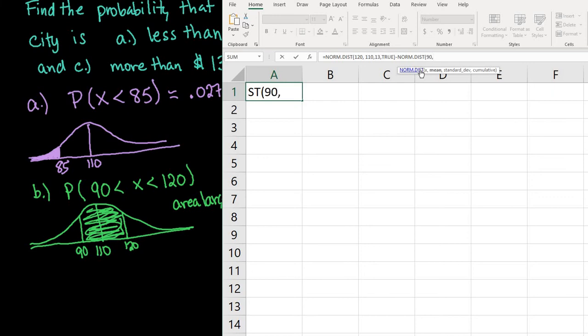Then I'll type NORM.DIST again with x value 90. Mean is still 110, standard deviation is still 13, and I still want true. We're subtracting out the unshaded region, taking the area up to 120 and subtracting the area to the left of 90.